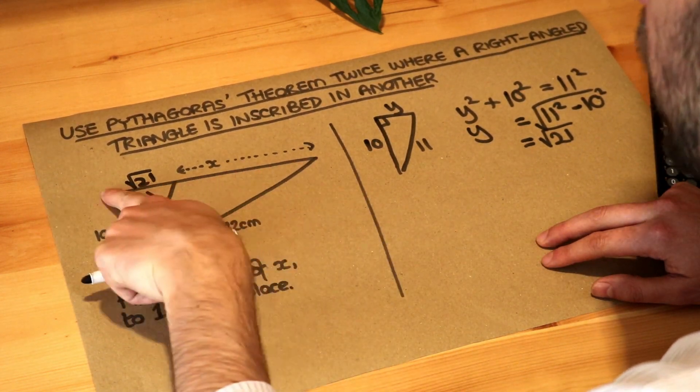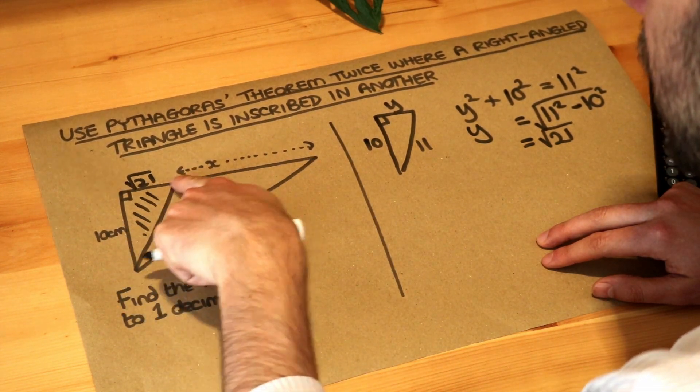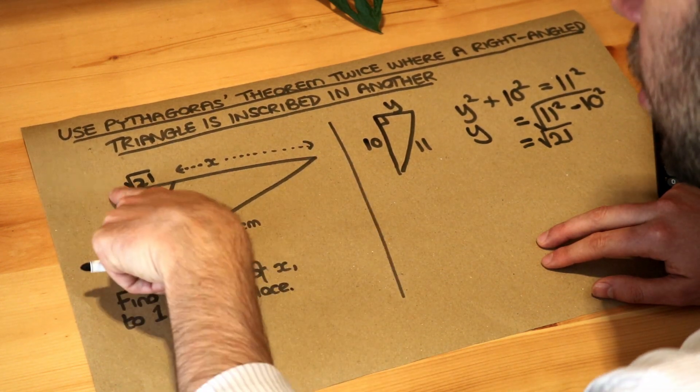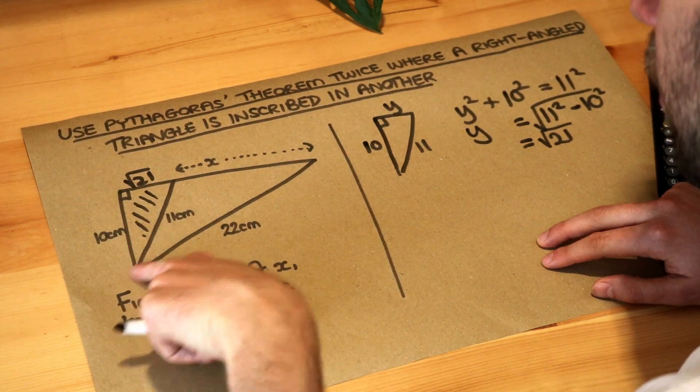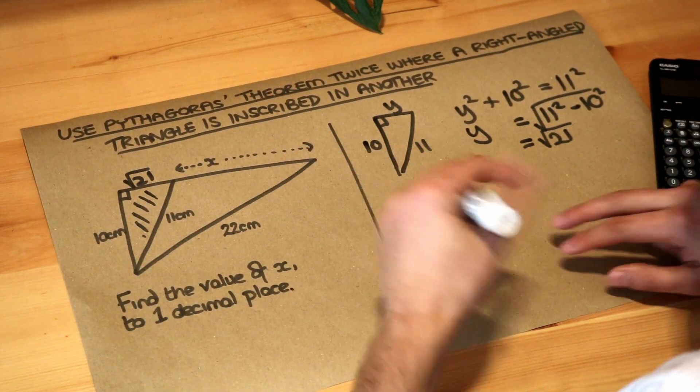Now if we knew this full length at the top we could just subtract the root 21 to then get the x and we can work out the full length at the top because look, on the whole triangle, the whole diagram we've got two of the lengths. We've got the 10 and we've got the 22.